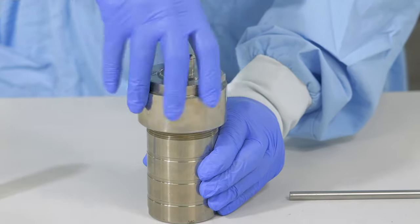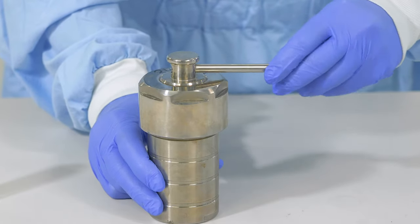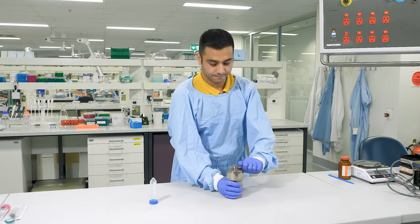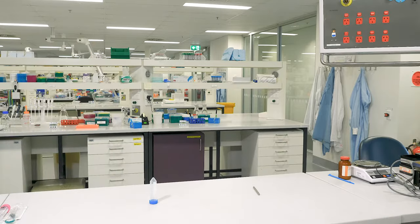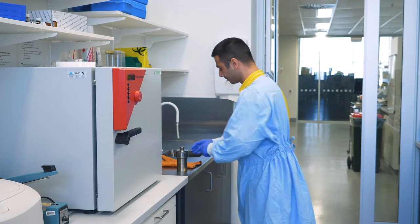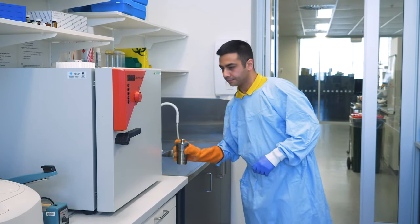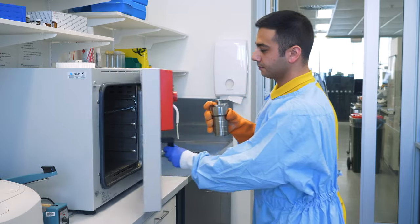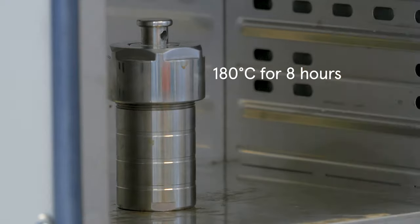I need to close the lid tightly with the locking rod before it goes into the furnace. Okay, now we are at the furnace. Let's place this in there for 8 hours. I will set the temperature to 180 degrees and set the timer. See you in 8 hours.